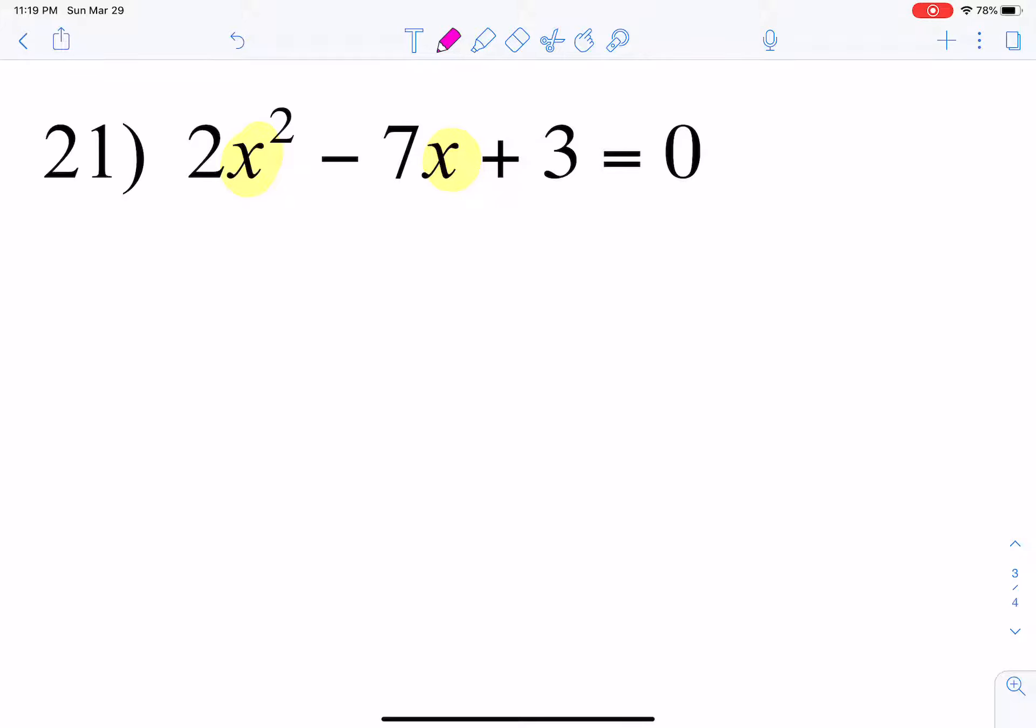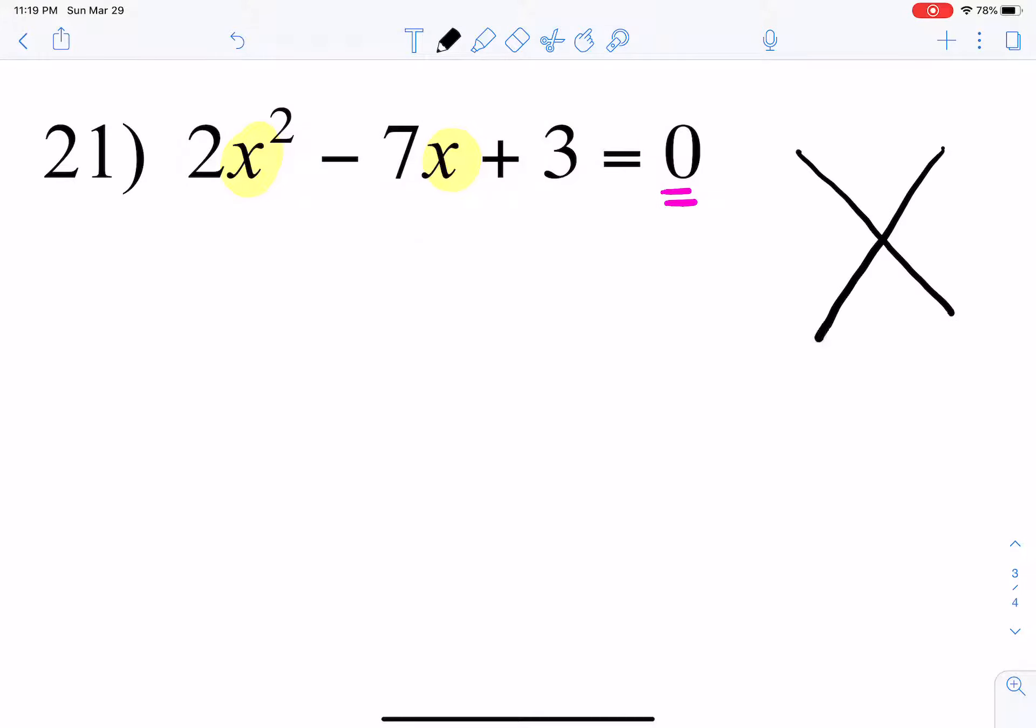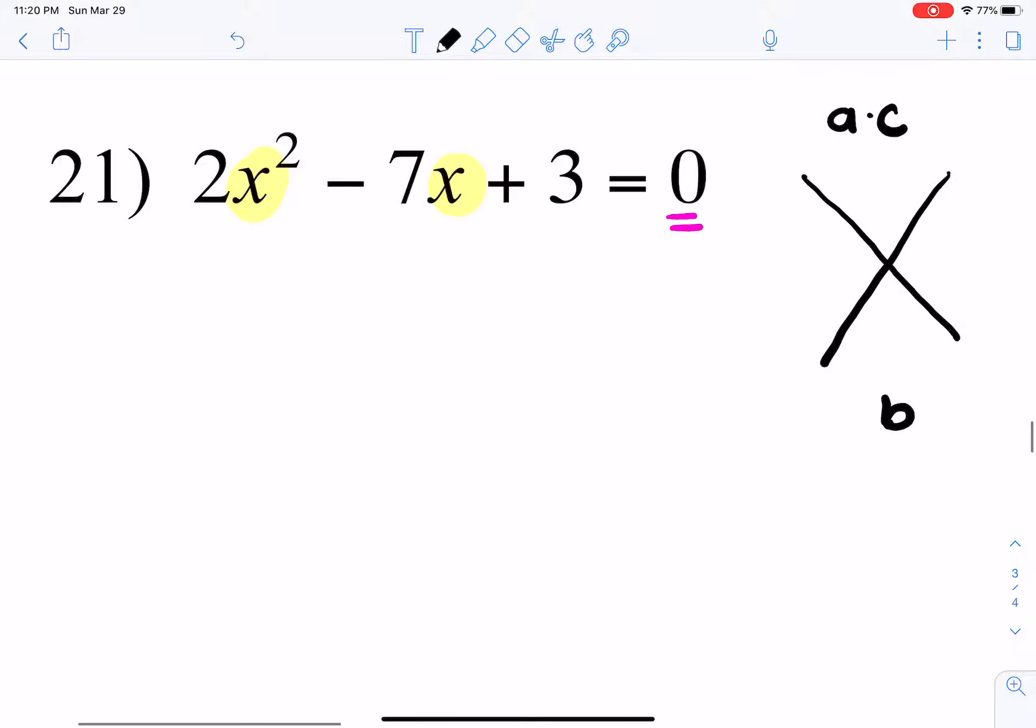So assess the equation. It's equal to 0, so we can start factoring right away. Remember to factor using the X method: a times c is on top and b is on the bottom. So, a equals 2, b equals negative 7, c is equal to 3.